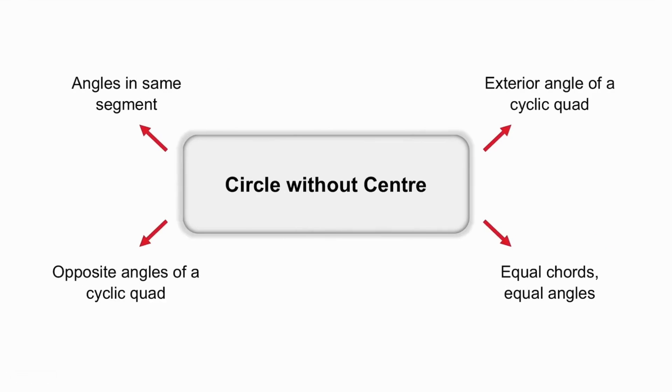Other geometry facts that you must remember with circles where you are not given the centre are: angles in the same segment are equal, opposite angles of a cyclic quadrilateral are supplementary, and the exterior angle of a cyclic quadrilateral is equal to the interior opposite angle. If you have two equal chords that do not form an isosceles triangle, don't forget that equal chords subtend equal angles.